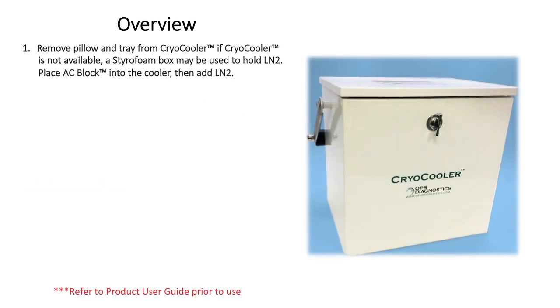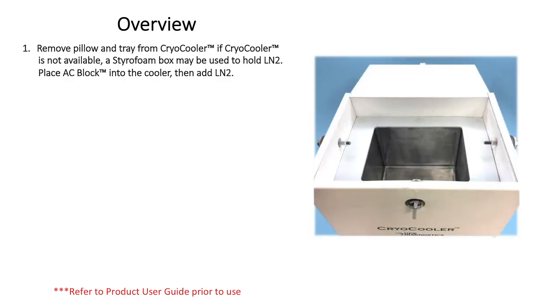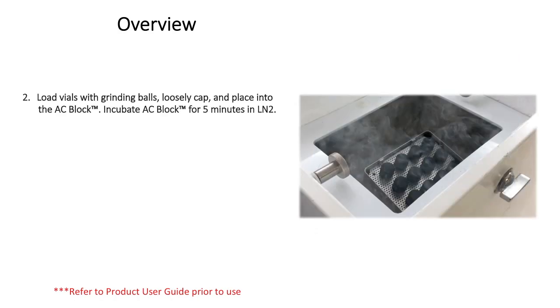Remove the tray and pillow from the cryo cooler. If a cryo cooler is not available, a styrofoam cooler can be used. Place the AC block in the bottom of the cryo cooler. Add liquid nitrogen to the cryo cooler so the level is even to the grate of the AC block.